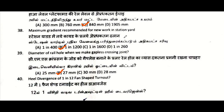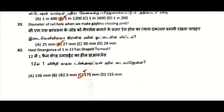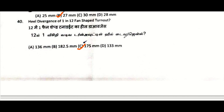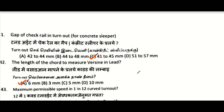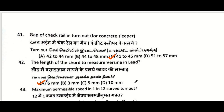Maximum gradient recommended for new work in a station yard: 1 in 1200. Diameter of rail hole when making a gapless joint: 27 mm. Heel diversion of 1 in 12 fan-shaped turnout: 175 mm. Gap of check rail in turnout for concrete sleeper: 41 to 45 mm.